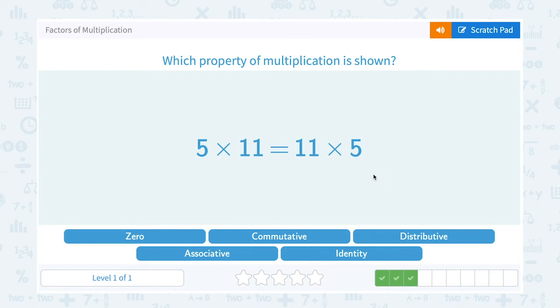Commutative property means we get the same answer even if we move or change the order of those numbers when we multiply.